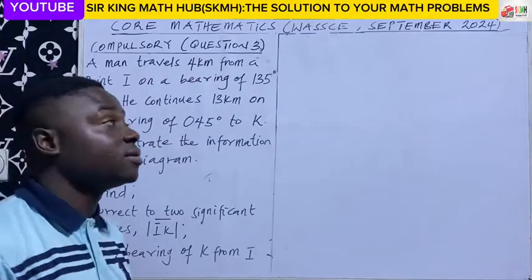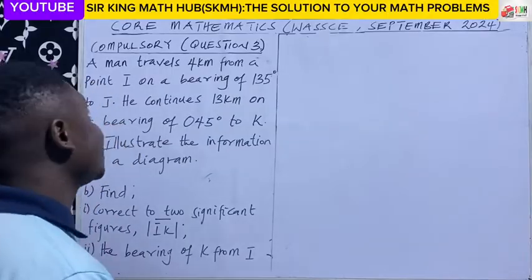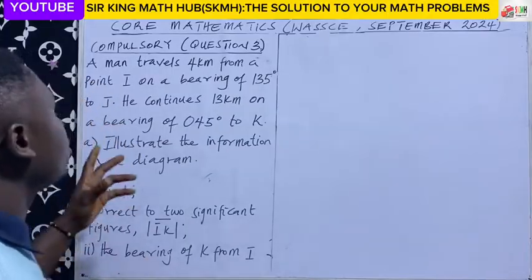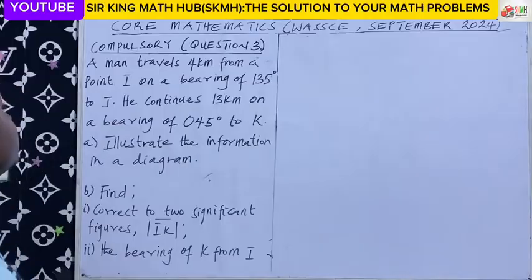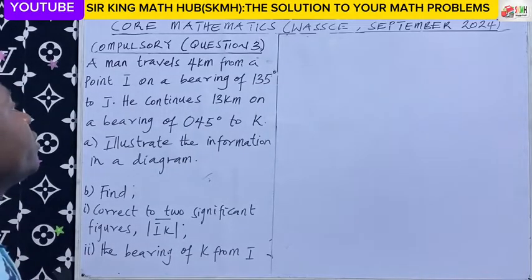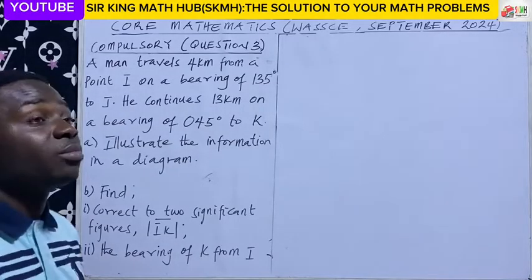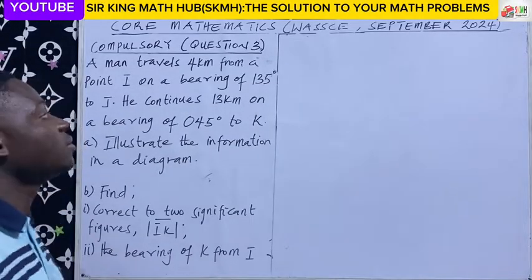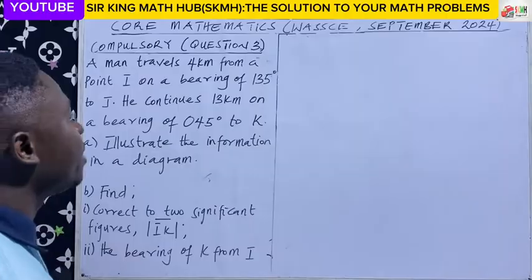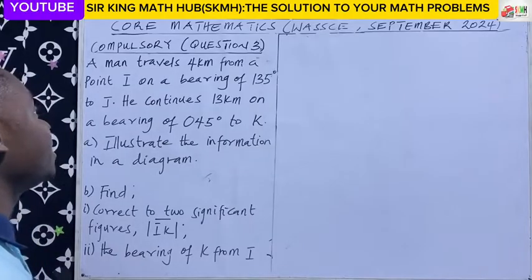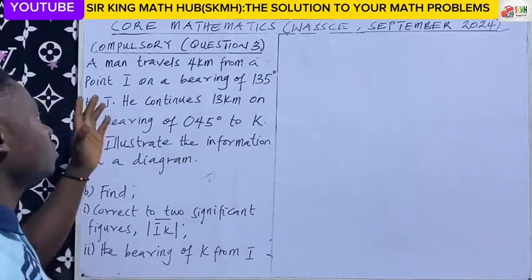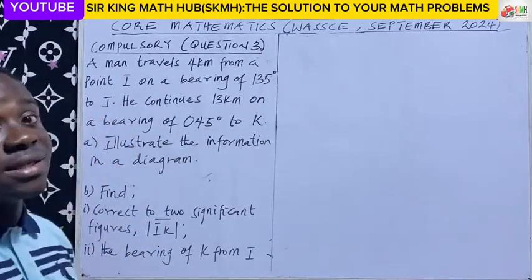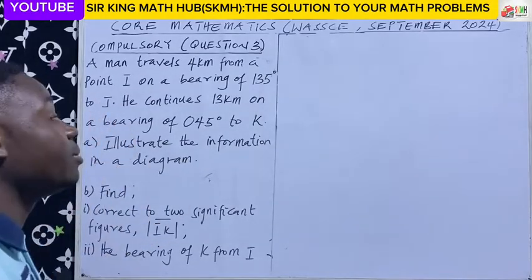They just ended WASI, Compulsory Question 3. A man travels 4km from a point I on a bearing of 135 degrees to J. So consider this is a distance-bearing problem.